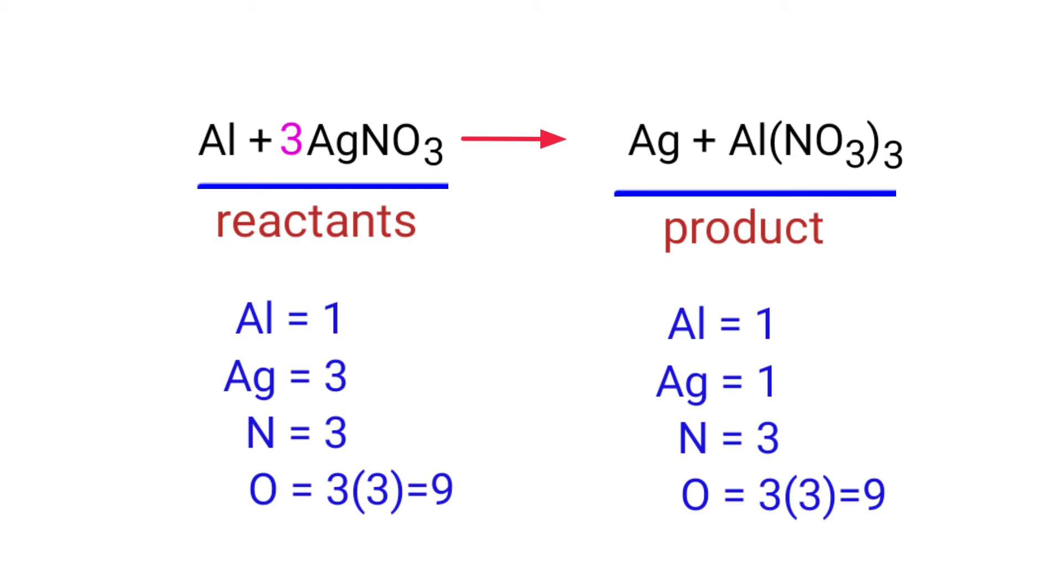The nitrogen and oxygen atoms are balanced, but the silver atoms are unbalanced. To balance that, we need to put a coefficient of three in front of Ag.